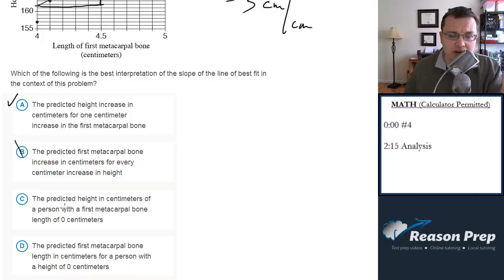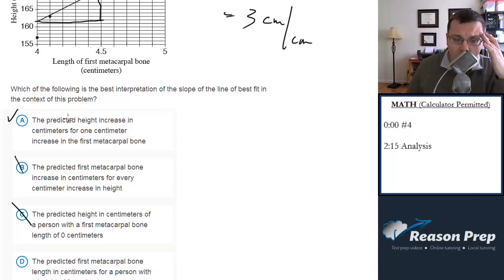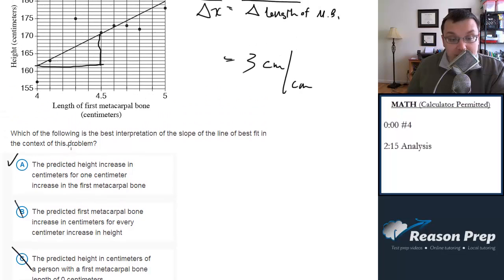The predicted height in centimeters of a person with the first metacarpal bone length of zero centimeters. No, that is not the slope. That would be the y-intercept, but that has nothing to do with the slope.